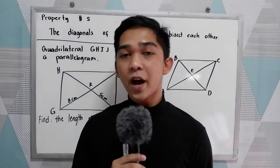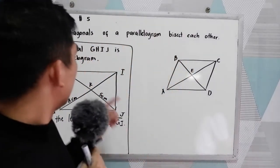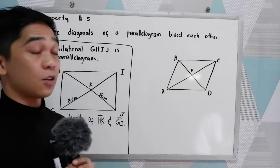Now let's have our property number 5. The diagonals of a parallelogram bisect each other.